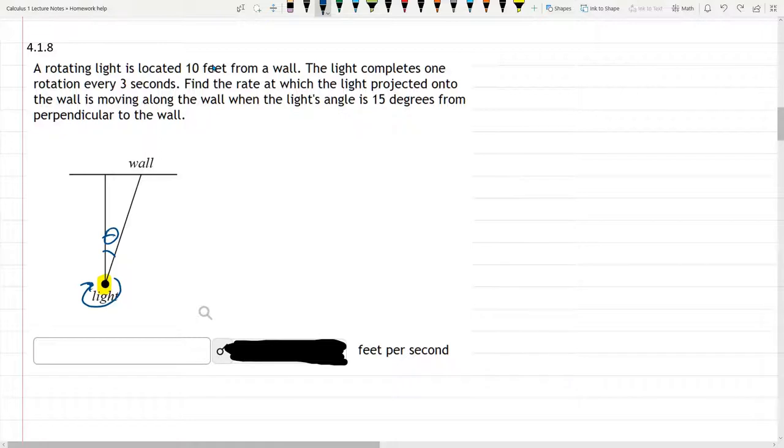Alright, 10 feet from the wall, so that is constant, that distance is 10. One rotation every 3 seconds. So this is one rotation every 3 seconds is a rate or a speed of rotation.